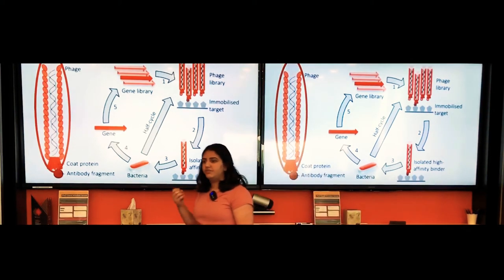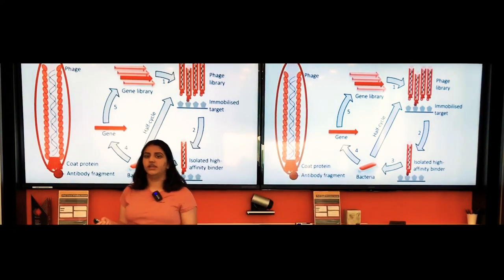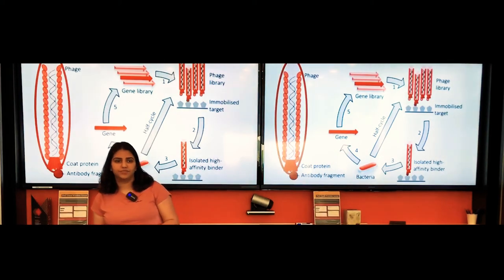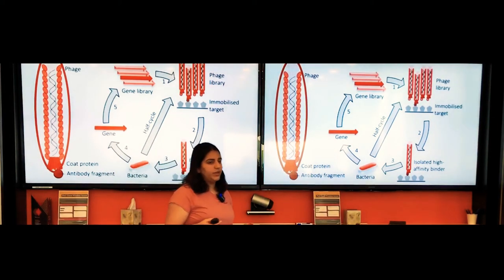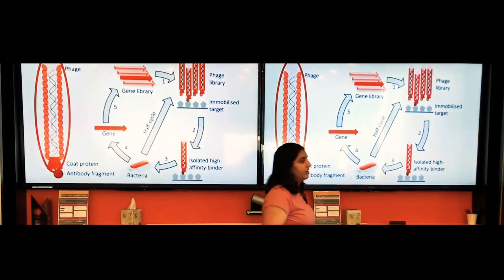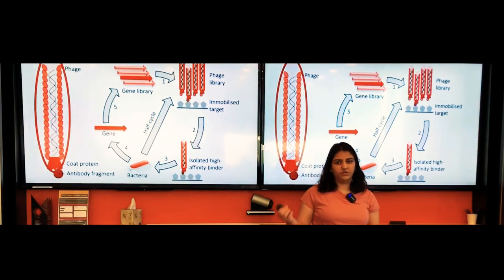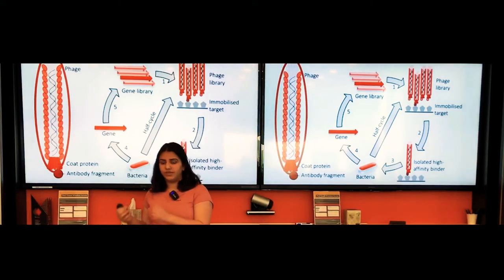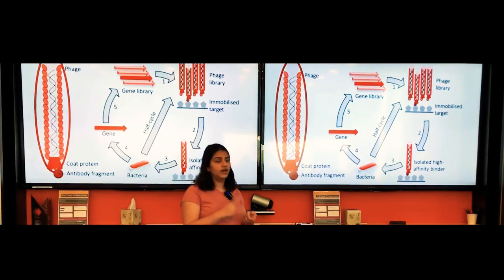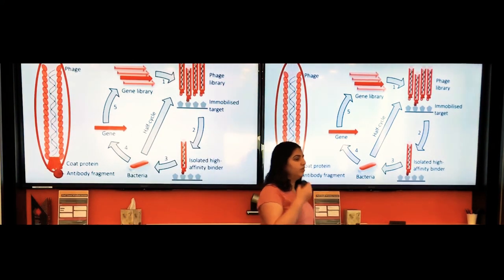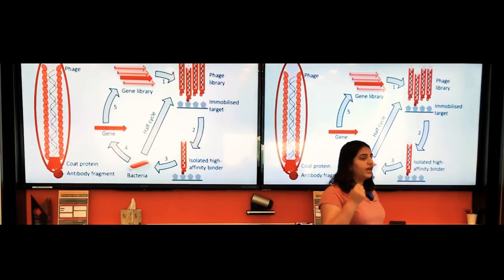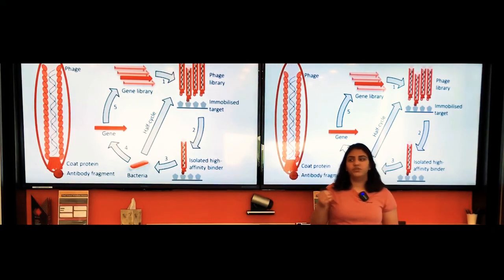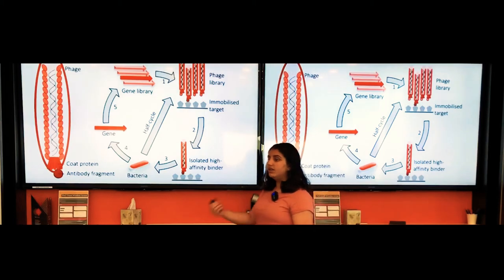Once gene 1 is inserted, the phage displays protein 1 on the outside with gene 1 on the inside. This way we establish a connection between the genotype, gene 1, and the phenotype, protein 1. The displayed protein can be screened against other proteins, peptides, or DNA sequences so we can study the interactions between the displayed protein and other molecules.